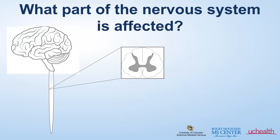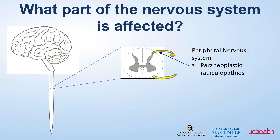Looking at the spinal cord in cross section, nerves exit from the spinal cord as part of the peripheral nervous system. Common disorders that can affect the peripheral nervous system include problems with the nerve root itself as it exits, called paraneoplastic radiculopathies or neuropathies. You can have problems within the sensory ganglion, called sensory ganglionopathies. These disorders can cause significant sensory impairment, often leading to loss of coordination because of lost sensory input that helps control movements.